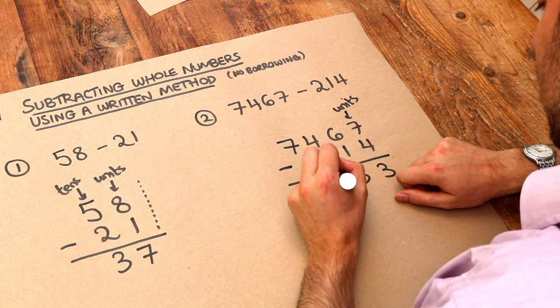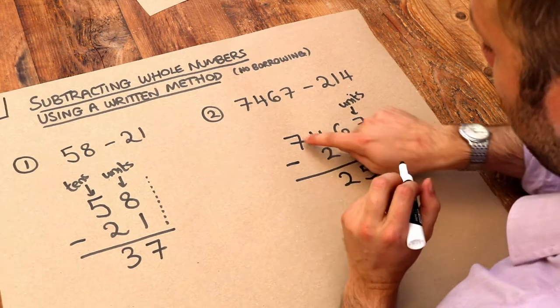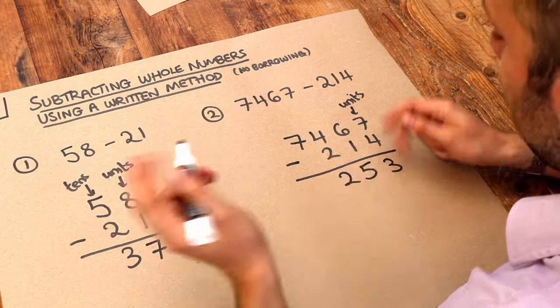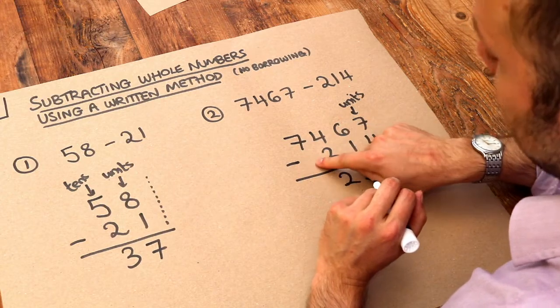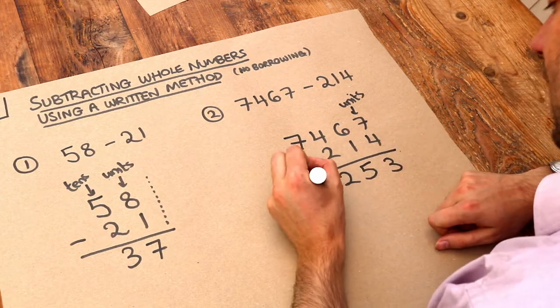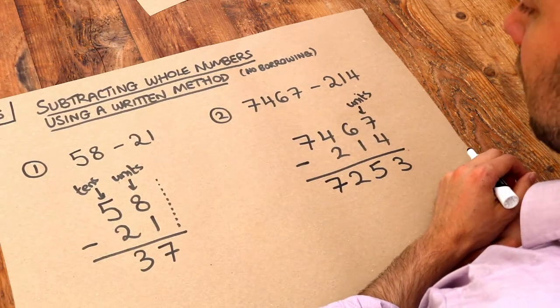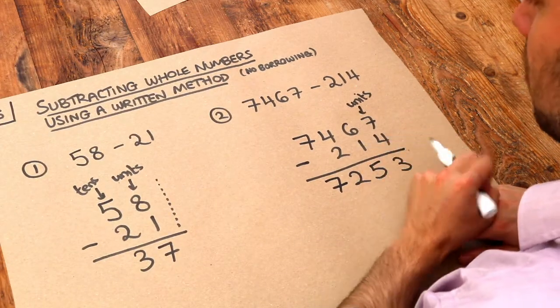And this last column, we got 7 minus blank. Well, 7, we're not subtracting anything from it, so it just stays as 7. And that really is it.